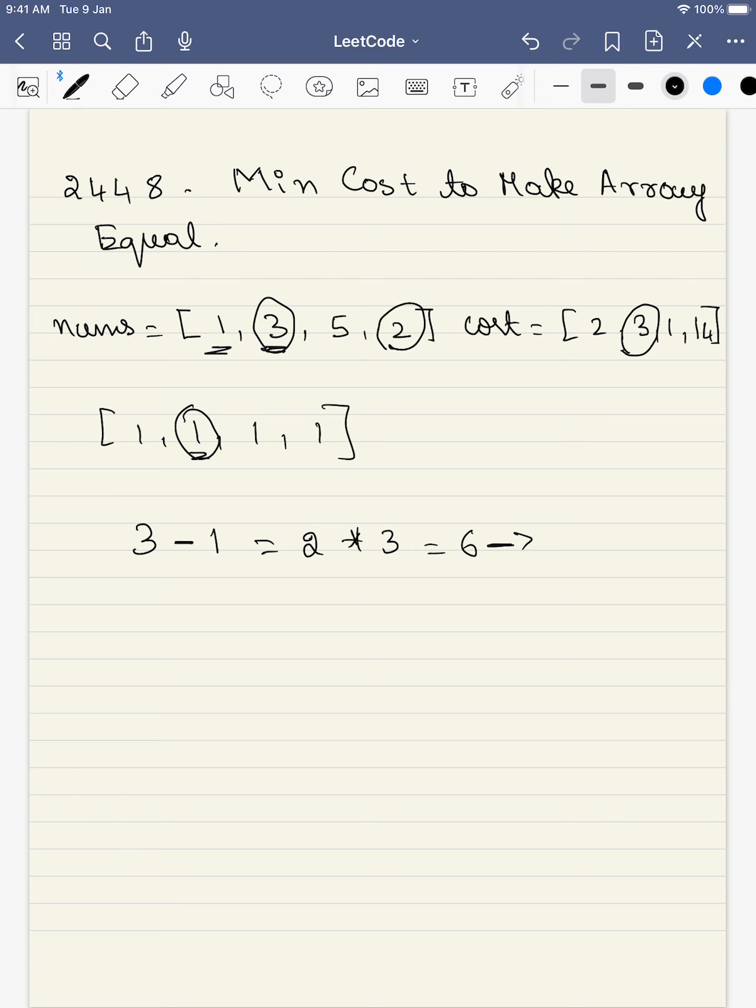Then again, this 2 will become 1. There is a difference of just 1, so you have to pay a cost of 14. Again, this 5 to 1, 4 into 1, you have to pay a cost of 4. This will be the total cost of changing this array to this array.